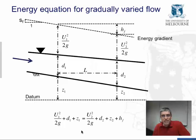And we can also draw the energy gradient. This is the line which follows the total head at the two cross-sections, and the energy gradient is denoted by S sub f. So we can see under this situation of gradually varied flow, in fact, we have three gradients. We have the bed gradient, we have the water surface gradient, and we have the energy gradient, and all three have different values, so none of them are parallel.